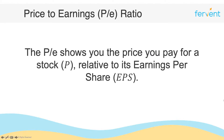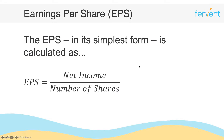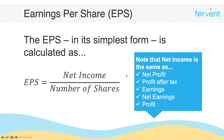If we think about the EPS, in its simplest form, it's calculated by taking the net income of the firm and dividing it by the number of shares. Because accountants love jargon, there are a few terms for net income, and it's important to know they all mean exactly the same thing. Whether you call it net profit, profit after tax, or earnings, we're referring to the net profit or net income of a firm.